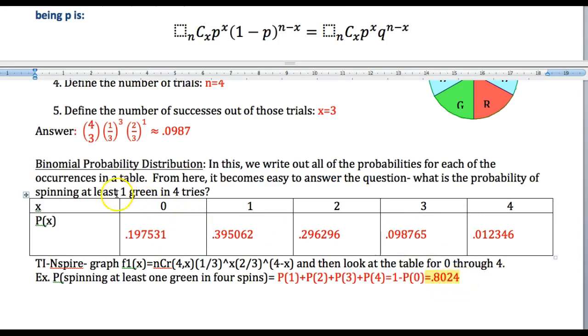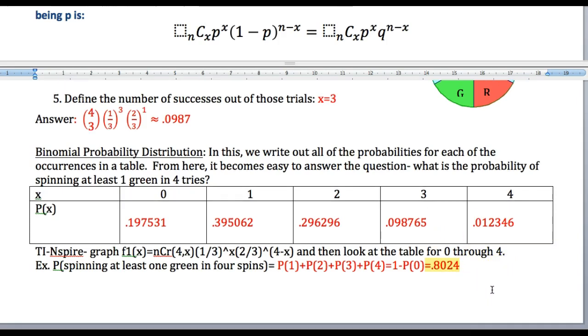So if I do that, either way—add all these up or else just one minus this one right here—I'm going to get 0.8024. And so that would be the probability of spinning at least one green, that includes one green in four tries. Now you need to know this, and the distribution is really nice when you write it out because you can get parts of the distribution and answer the questions that they want.